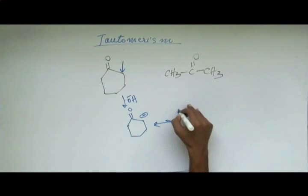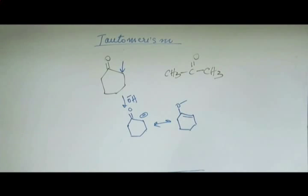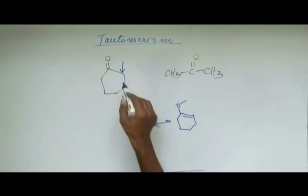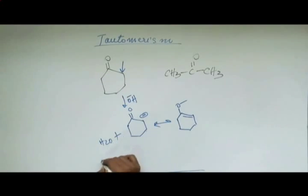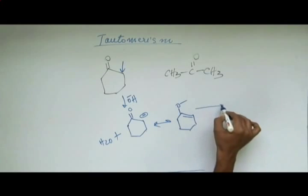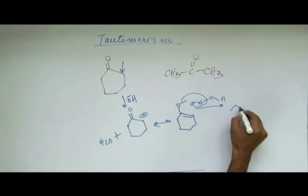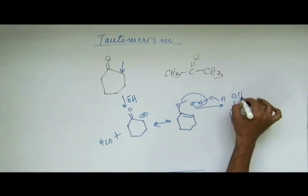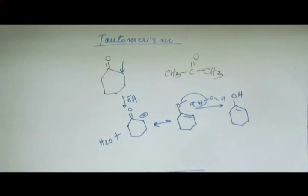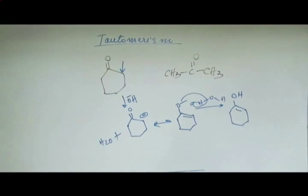Step two is resonance. Step three: when OH minus abstracted hydrogen from the alpha carbon, it formed H2O, and this H2O will come back to return the hydrogen it took in the first step. This hydrogen goes to oxygen and forms the enol. You have to practice this by hand — you won't be able to do it unless you practice. From this keto we get this enol.